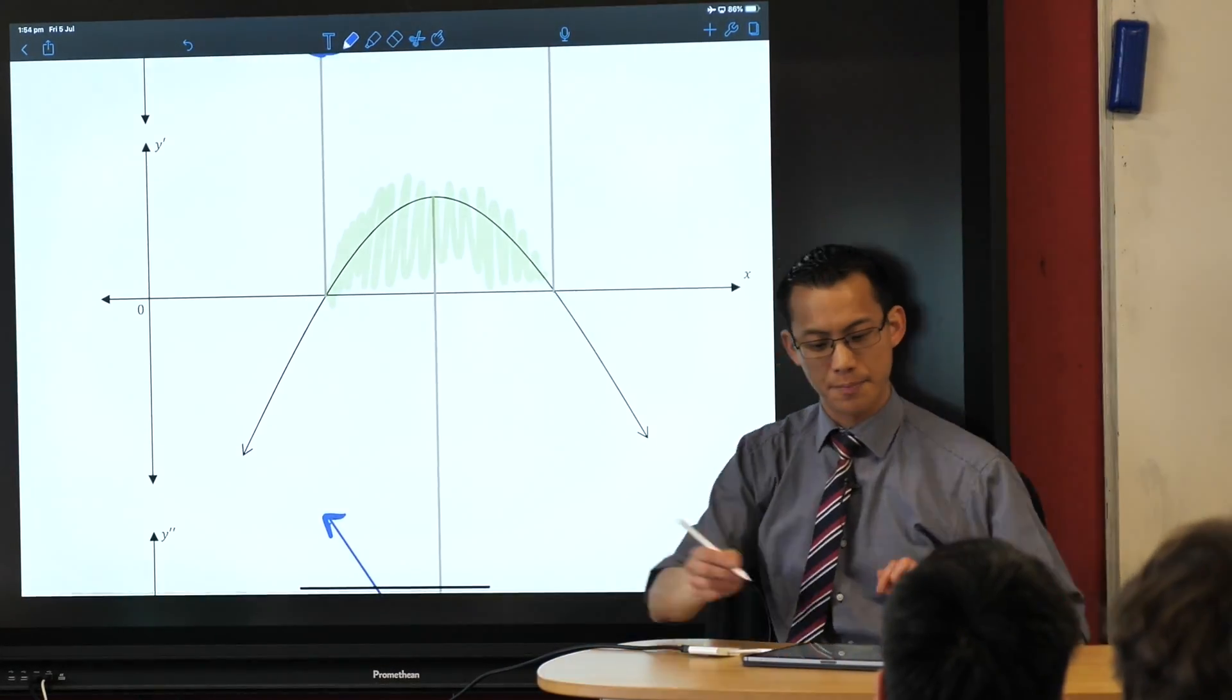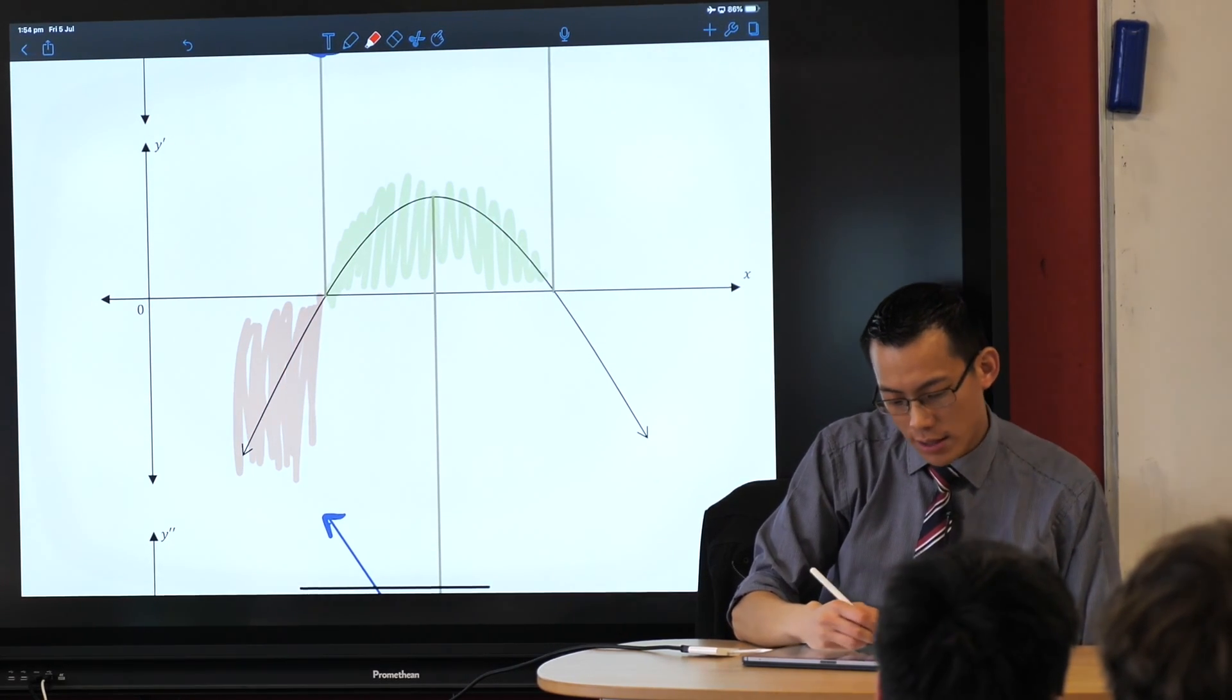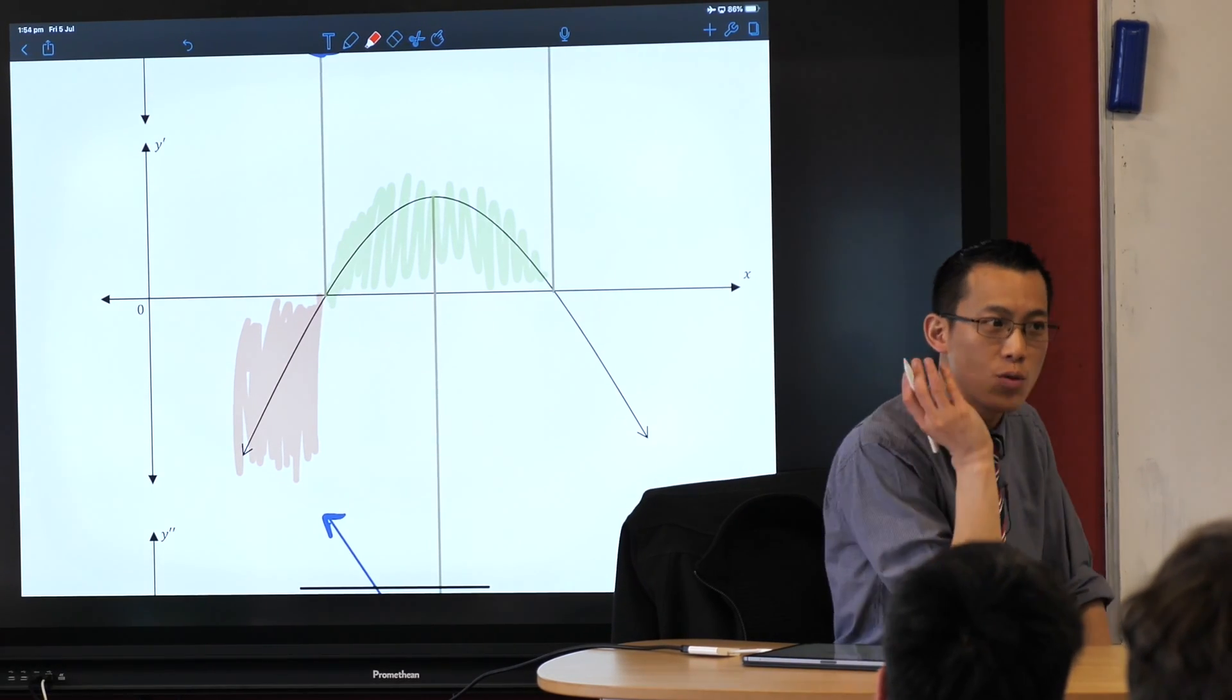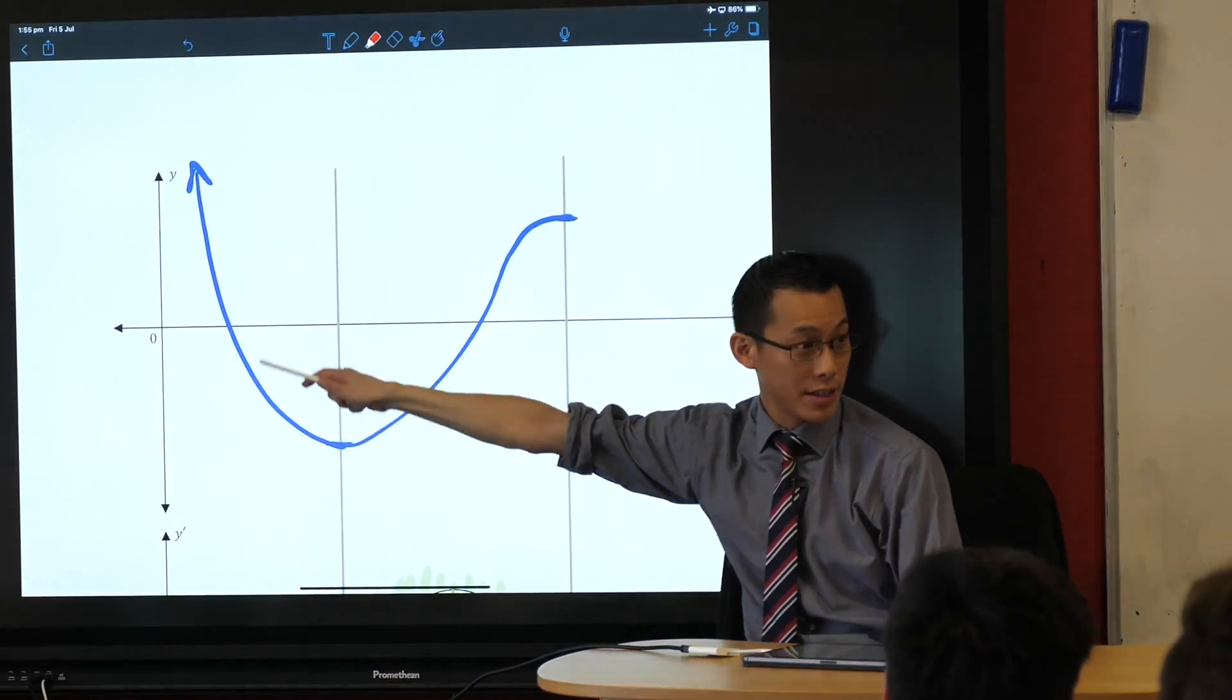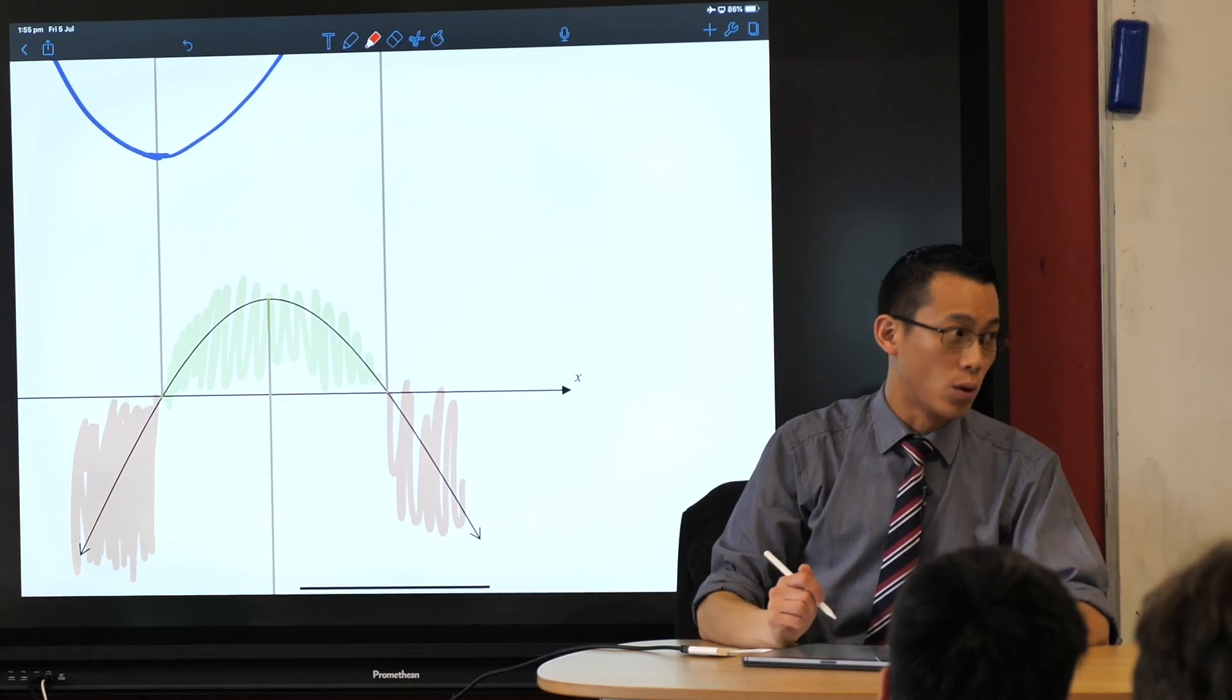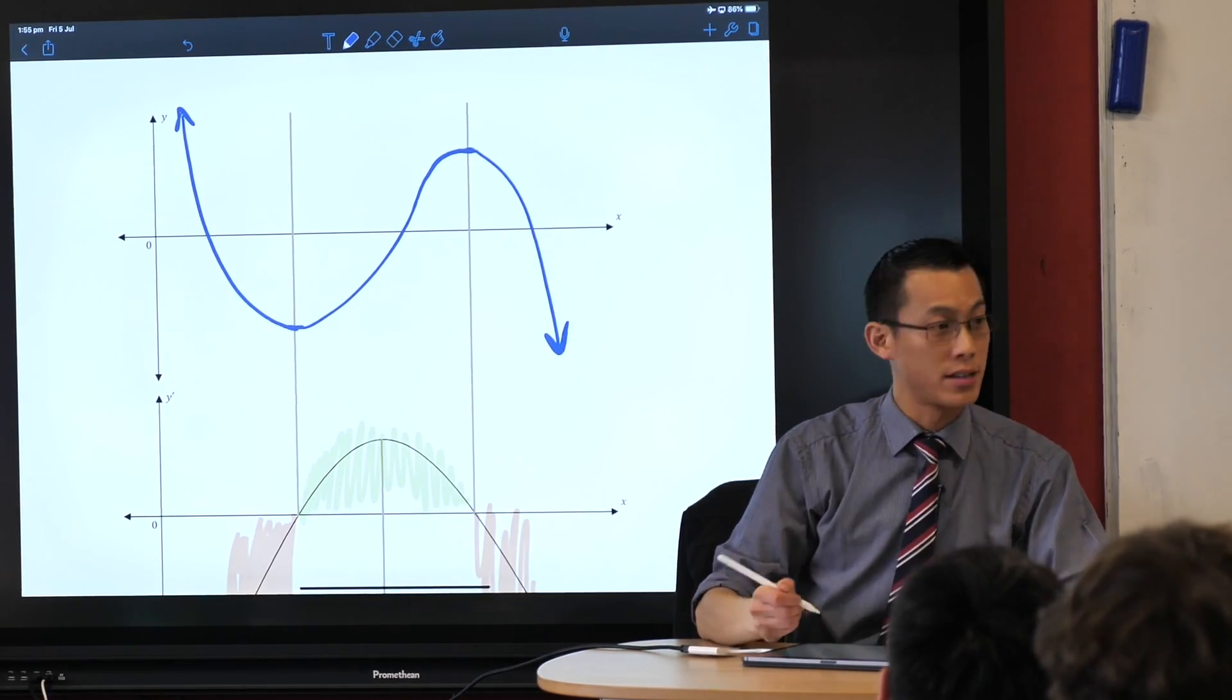This section here, let me shade it in a color to make it really obvious. What's the sign of the gradient in this section? It's negative, which should tell you what about the original function. It's going down, it's decreasing. You see that? Do you see how it's decreasing? And you see the same thing over here on this side, that guy's also decreasing. So that's why I know this should be the rest of the shape.